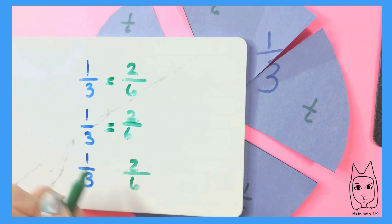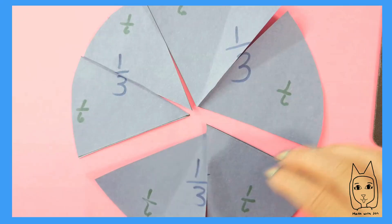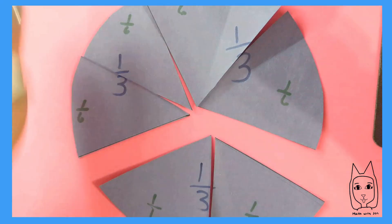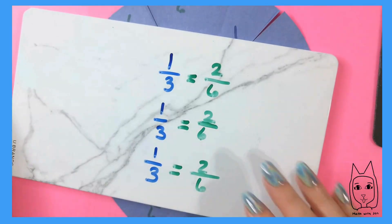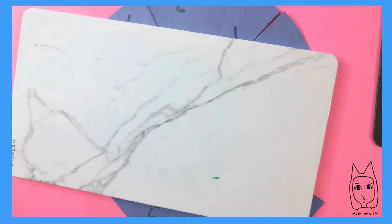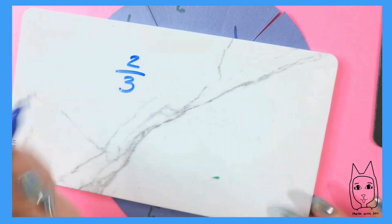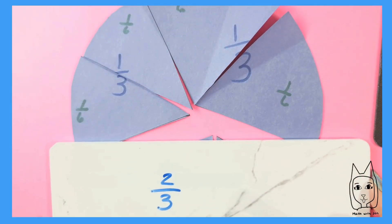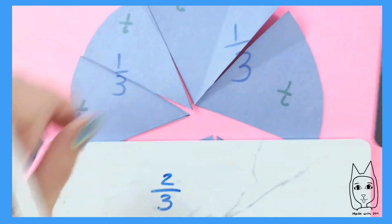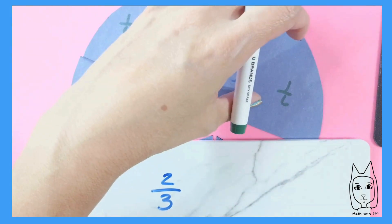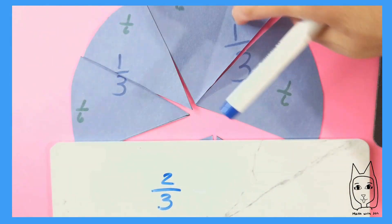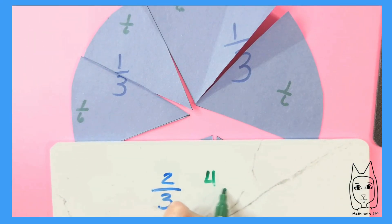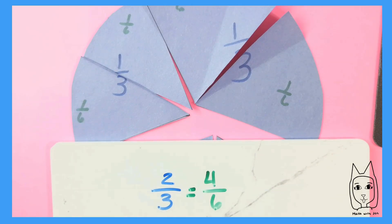So one-third is equivalent to two-sixths. Now I'm going to look at two-thirds of this whole. Each of those thirds have been broken up into two parts. So instead of having two-thirds pieces, I now have one, two, three, four-sixths. So two-thirds is equivalent to four-sixths. And that is what an equivalent fraction is.